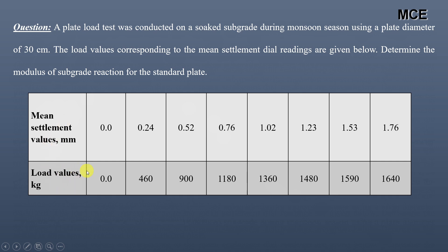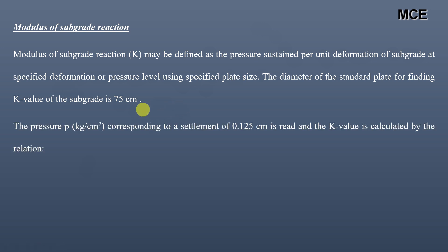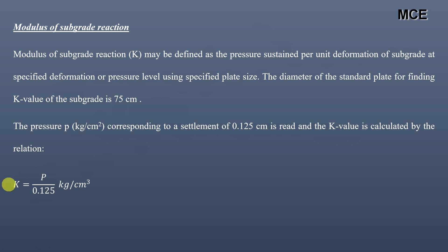The modulus of subgrade reaction may be defined as the pressure sustained per unit deformation of subgrade at a specified deformation or pressure level using a specified plate size. The diameter of the standard plate for finding the K value is 75 centimeters or 750 mm. The modulus of subgrade reaction is always determined for a settlement of 0.125 centimeters or 1.25 mm. The K value is calculated by the relation: K = pressure divided by 0.125, with units of kg per centimeter cubed.